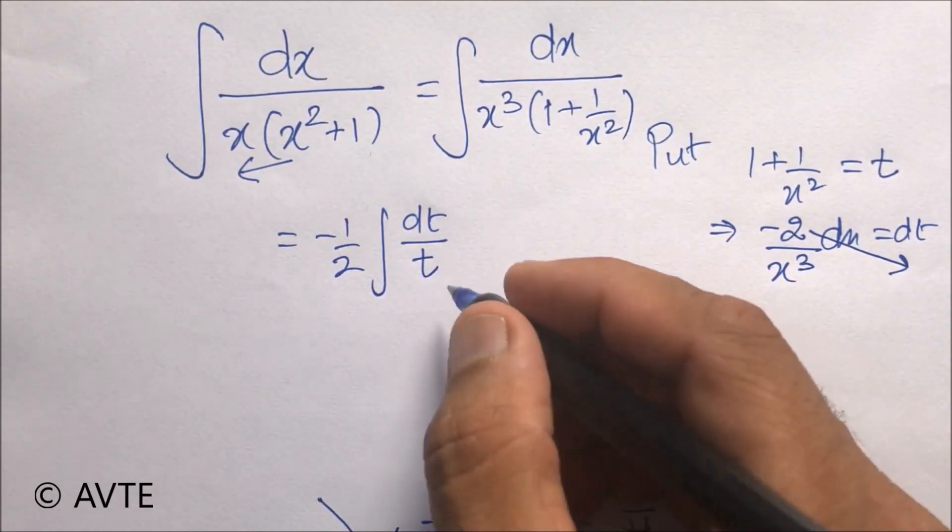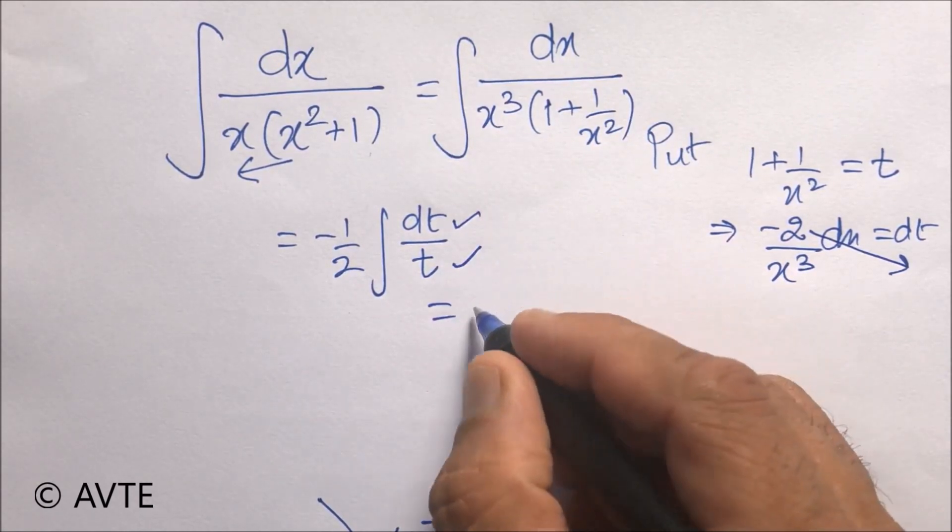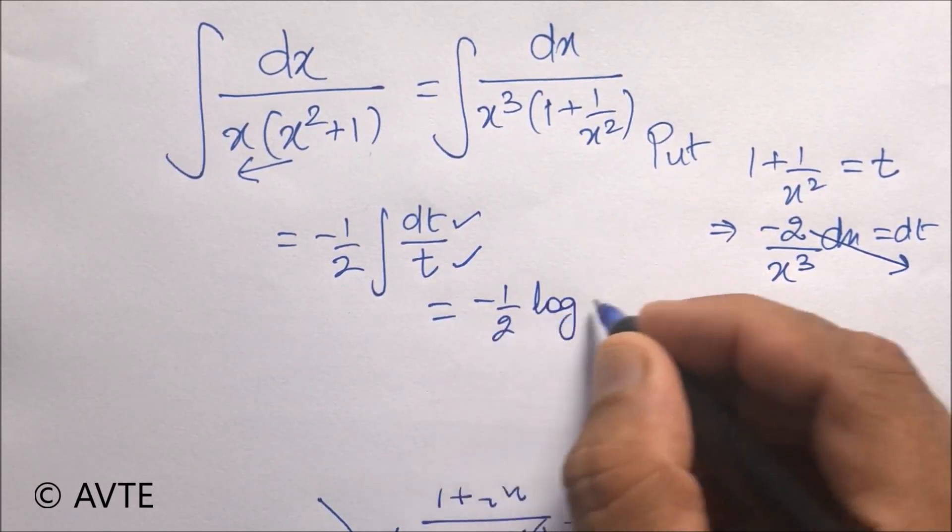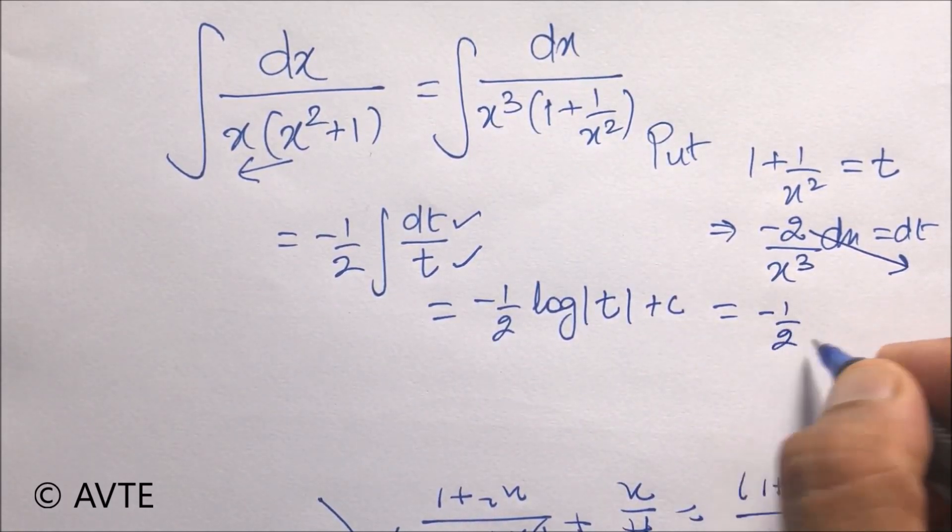And this way it becomes a very simple question because the integration for dt over t is log mod t. So your answer comes as minus 1 by 2 log mod t plus c.